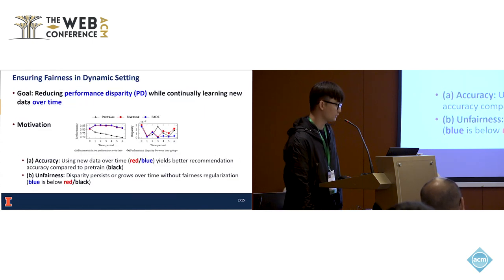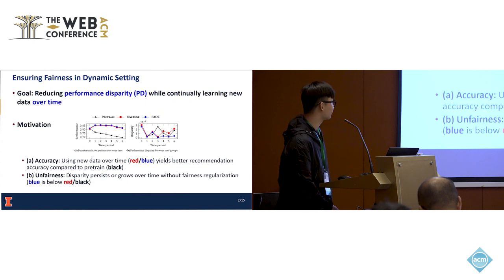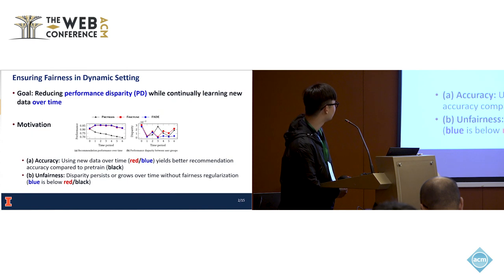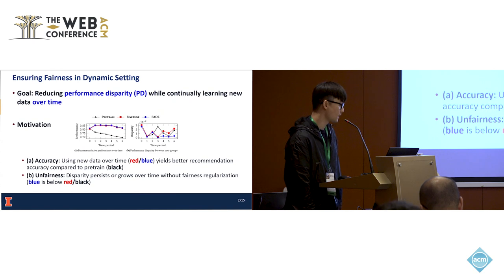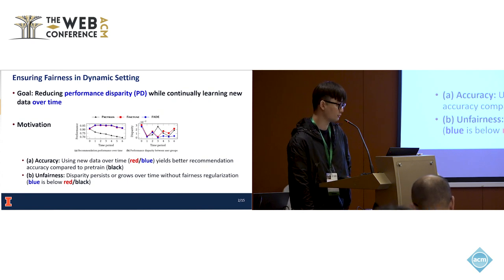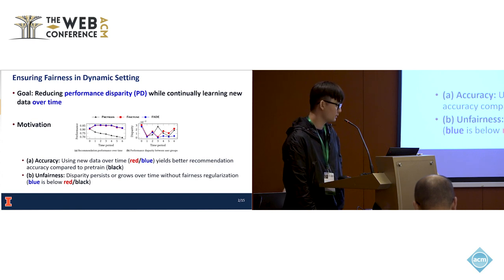The goal of this paper is reducing performance disparity while continually learning new data over time. As motivation, I present some experimental results from three models. In the left figure, we can see that using new data over time, shown by the red and blue curves, has better recommendation accuracy compared to the model that does not use new data. In the right figure, we can see that disparity persists or grows over time without fairness regularization, as shown by the red curve.